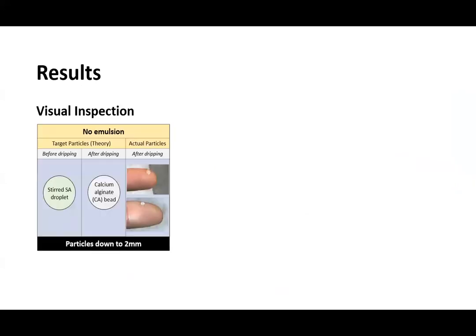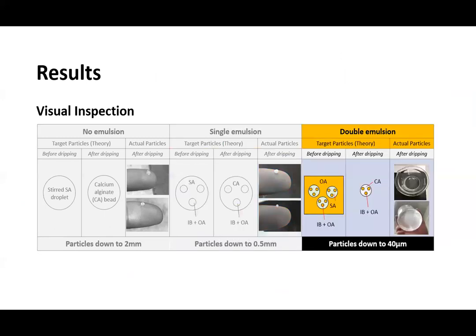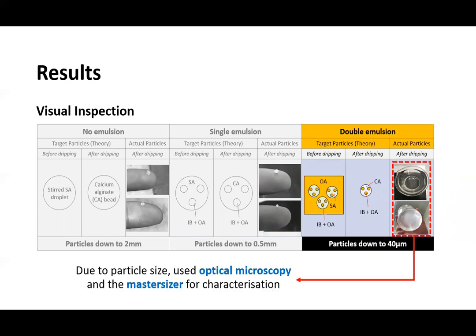From the trials, upon visual inspection, it could be seen that no emulsion creates particles down to 2 mm, which are transparent. The single emulsion creates particles down to 0.5 mm, which are white in appearance. And the double emulsion creates particles down to 40 microns, which are not visible by eye and require optical microscopy and the master sizer for characterization.